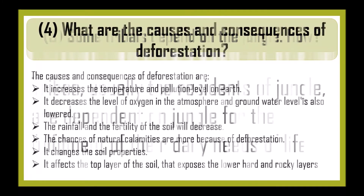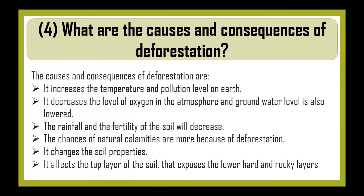What are the causes and consequences of deforestation? Deforestation increases temperature and pollution levels on earth. It decreases the level of oxygen in the atmosphere and lowers groundwater levels. Rainfall and soil fertility decrease. The chances of natural calamities increase. It changes soil properties and affects the top layer of soil, exposing the lower hard and rocky layers.